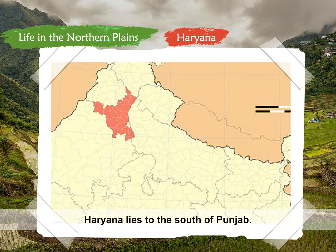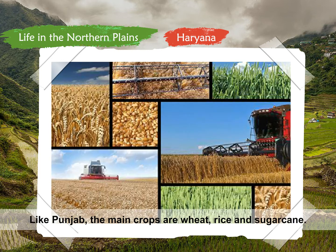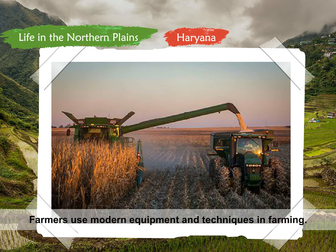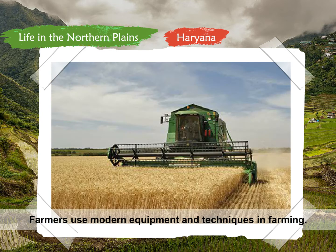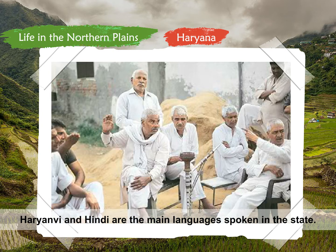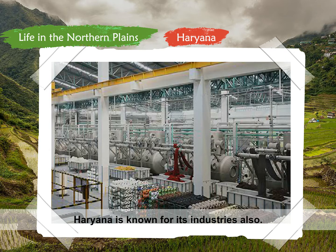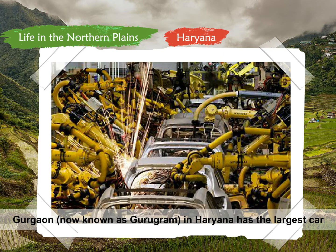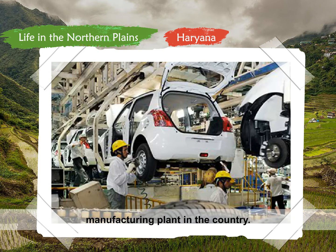Haryana lies to the south of Punjab. Chandigarh is also the capital of Haryana. Like Punjab, the main crops are wheat, rice, and sugarcane. Farmers use modern equipment and techniques in farming. Haryanvi and Hindi are the main languages spoken in the state. Haryana is known for its industries also. Gurgaon, now known as Gurugram, in Haryana, has the largest car manufacturing plant in the country.